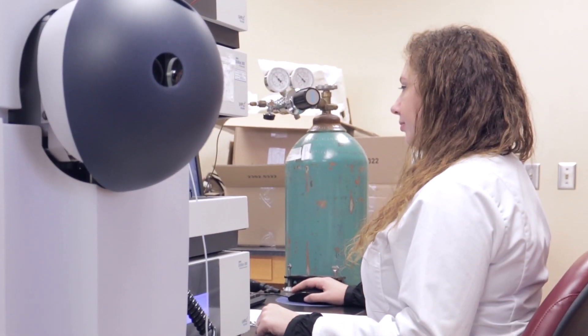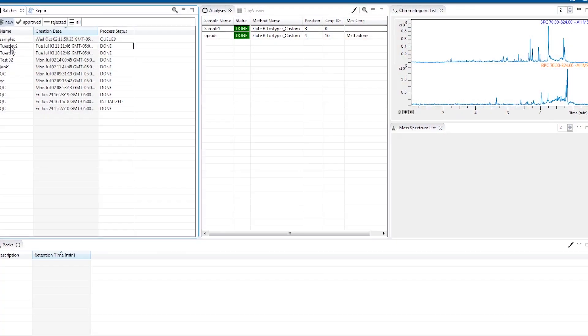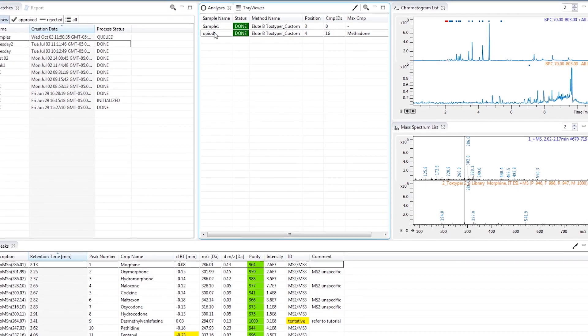So while all of our methods tend to have the same sort of preparation in terms of sample preparation, we have been able to just utilize the ToxTyper system as a general screen of any substance. And that has really helped us, especially if we had a priority case or we do have a high volume of unknown cases or cases that are pending toxicology that we really need to at least get an overall view of what could have contributed to this individual's death.